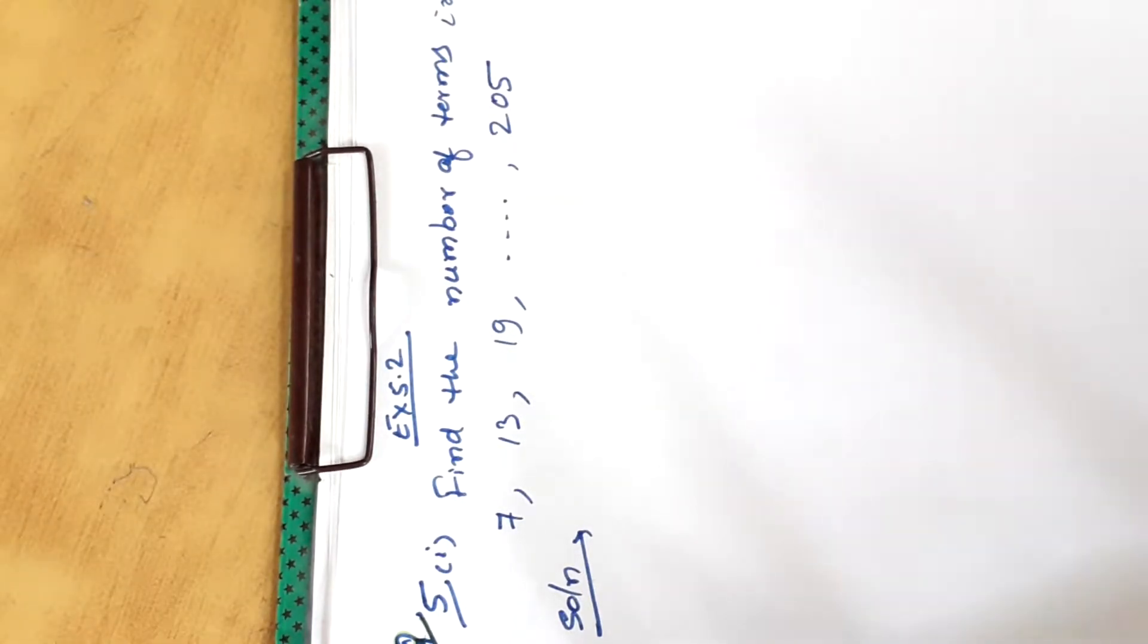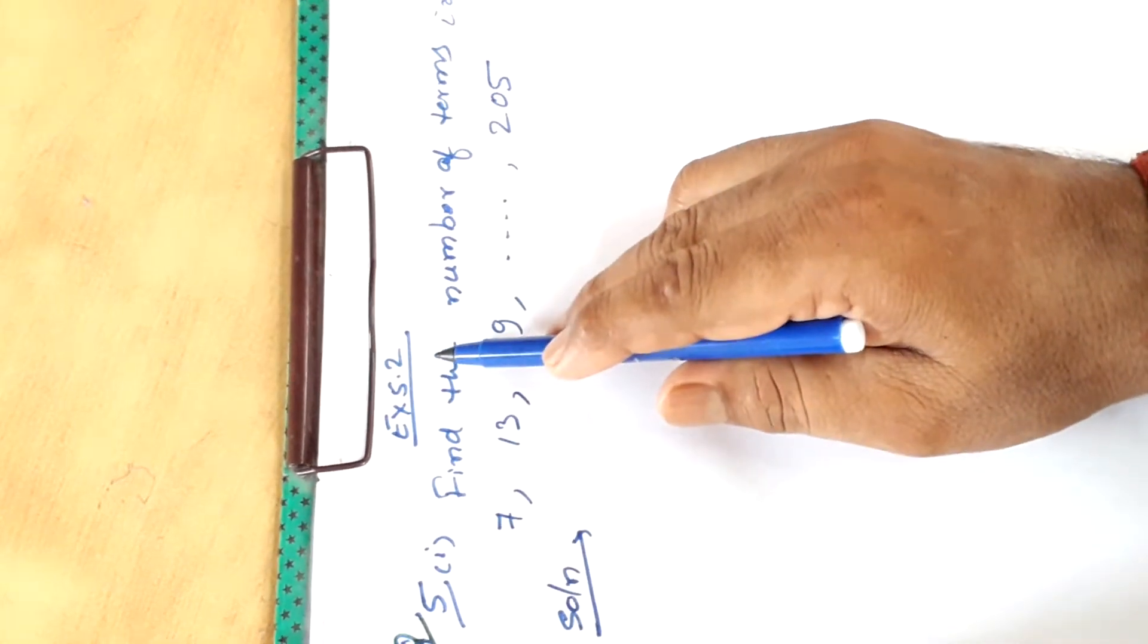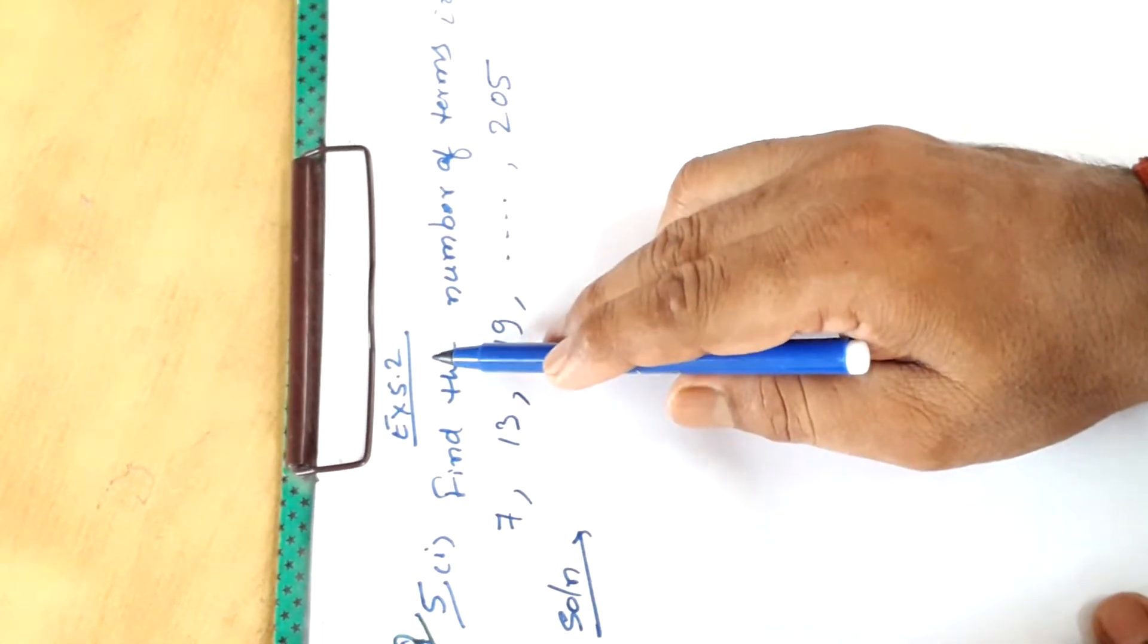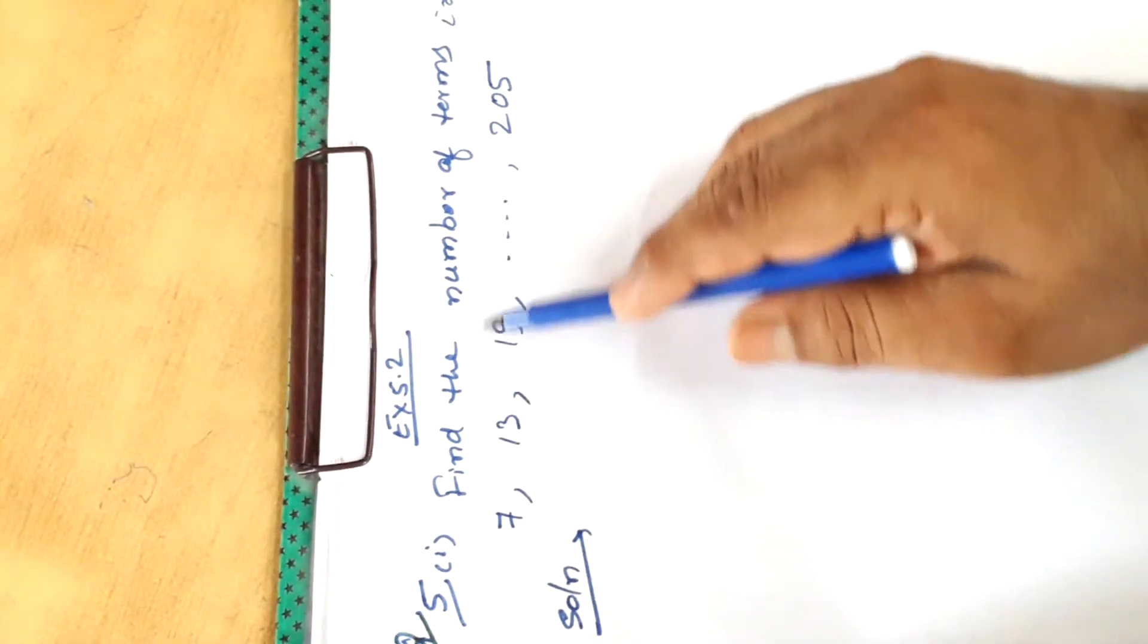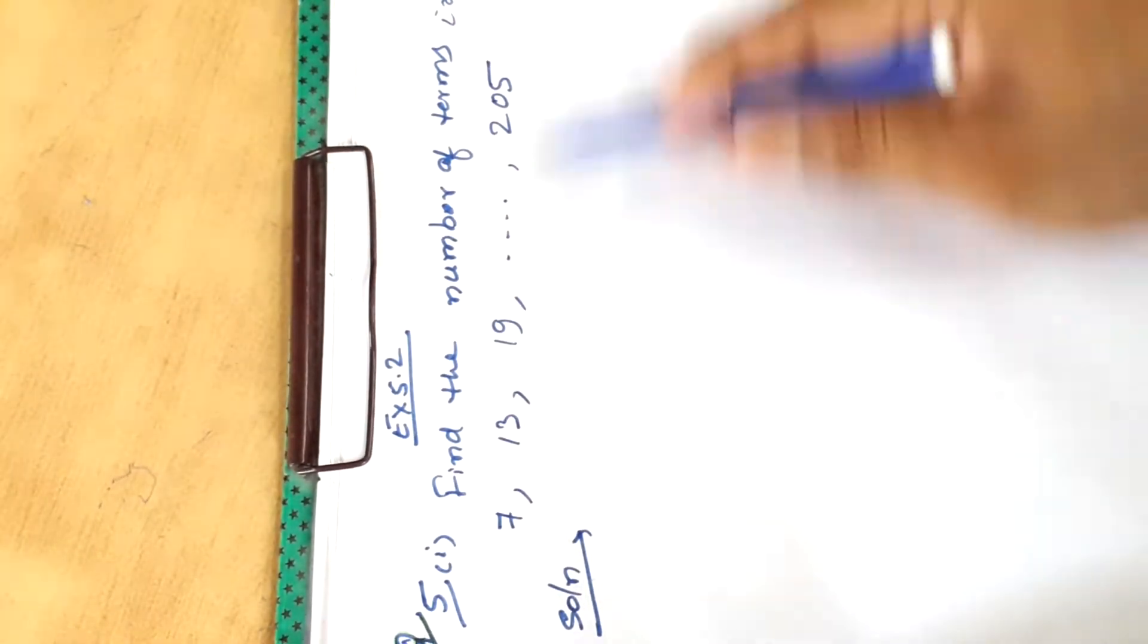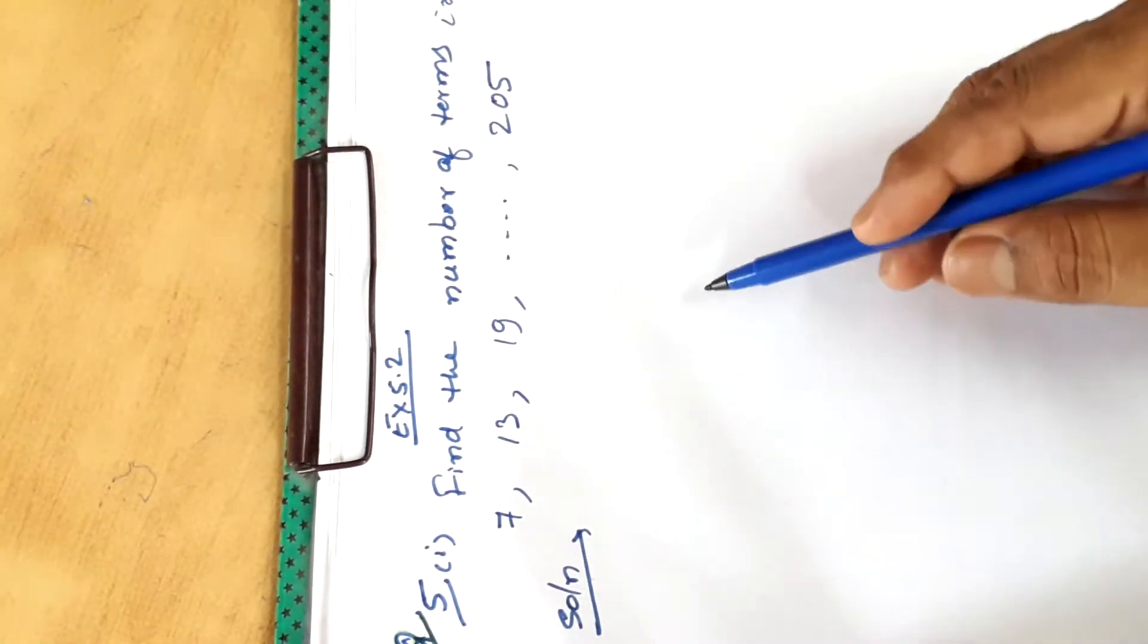Here the question is first part of question number 5, exercise 5.2, chapter AP, class 10. The question is find the number of terms in this AP: 7, 13, 19, to order the 205.